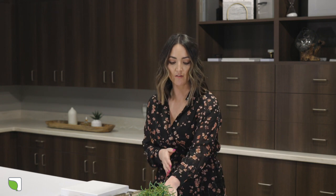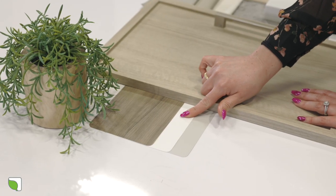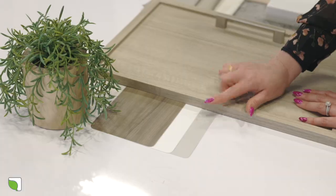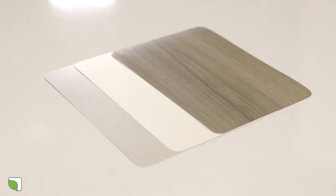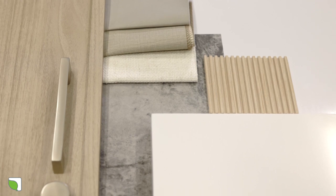To go along with that I have three different accents, one being a little bit darker wood grain that would pair nicely with the main wood grain and then two solid colors, one on the warmer gray side and then a warmer white. Next I have two different countertop materials.